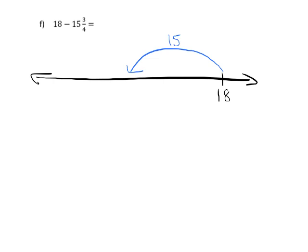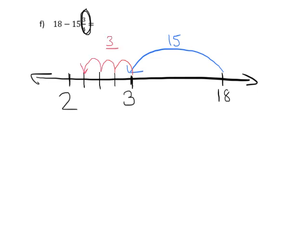I'm going to go backwards 15, which puts me at 3. Now I need to go backwards 3-fourths. I'll make an interval from 2 to 3 — that's an interval of 1 — and cut it into fourths: one, two, three, four. Now I go backwards 3-fourths: one, two, three-fourths. So in total I went backwards 15 and 3-fourths, which is what this subtraction means.